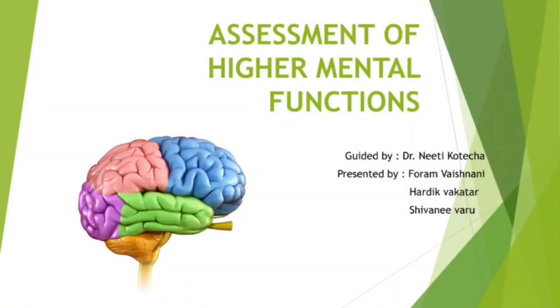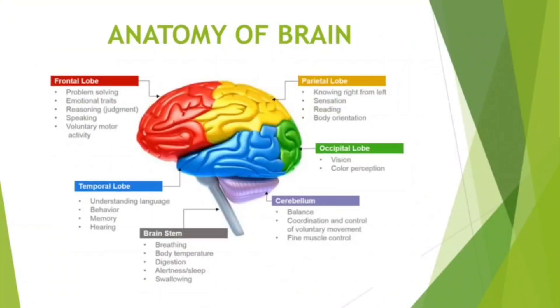Assessment of Higher Mental Functions. Anatomy of the Brain: it consists of the frontal lobe, parietal lobe, occipital lobe, temporal lobe, cerebellum, and the brainstem.